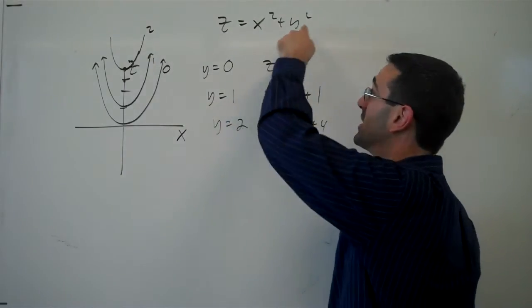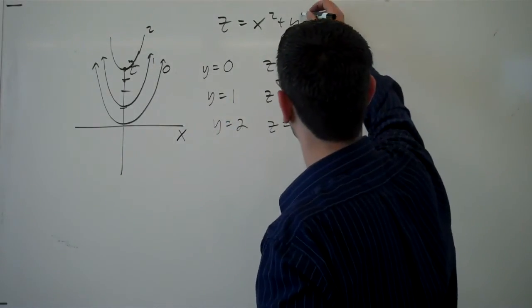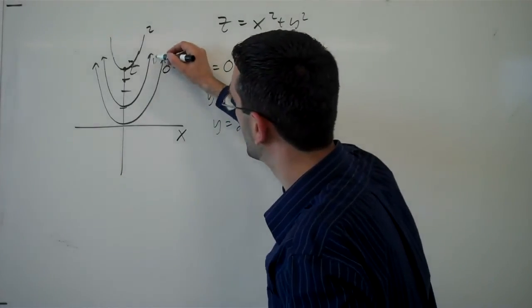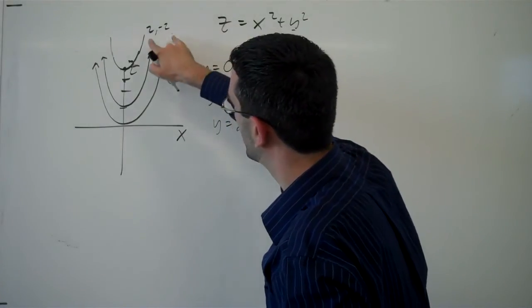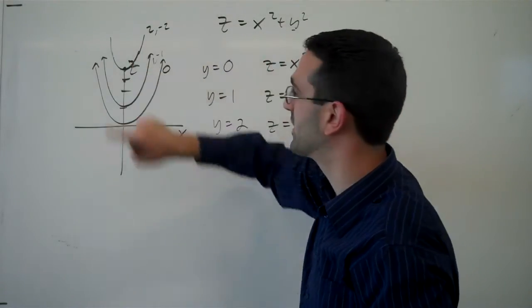Notice if y was negative 1, because of that square, we'd still be getting the same shape. And if y was negative 2, we'd get this curve again.